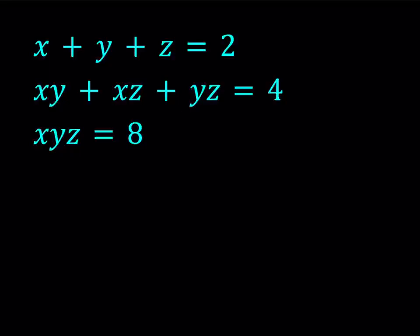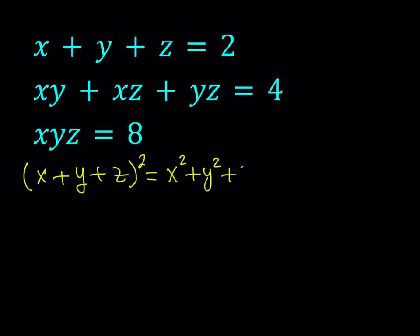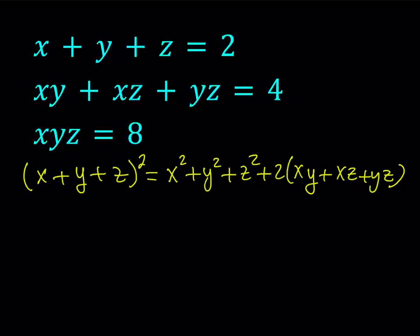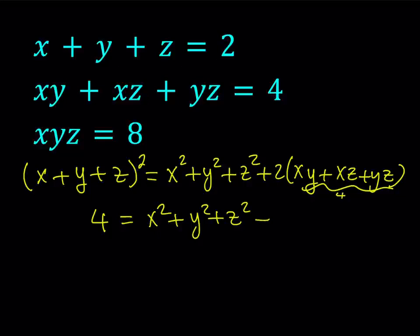What am I going to do first? I'm going to be calculating some expressions. Let's start with the first one. I'd like to take x plus y plus z and square it, and my goal is to get x squared plus y squared plus z squared. When you square 2, you're going to get 4. And x squared plus y squared plus z squared plus — xy plus xz plus yz is equal to 4, so 2 times 4 is equal to 8. We're adding an 8, which means x squared plus y squared plus z squared is equal to negative 4.